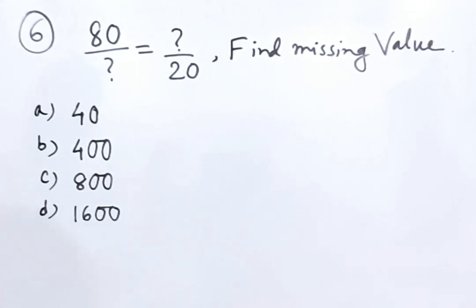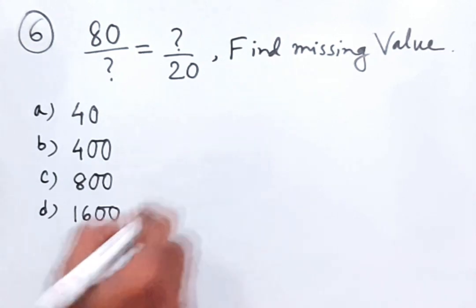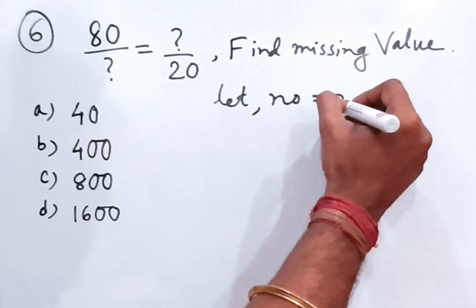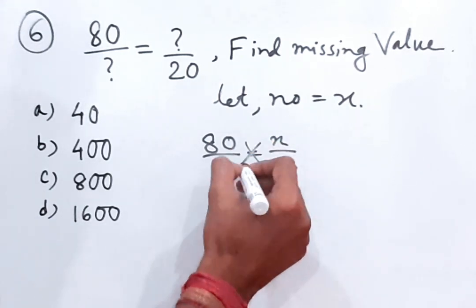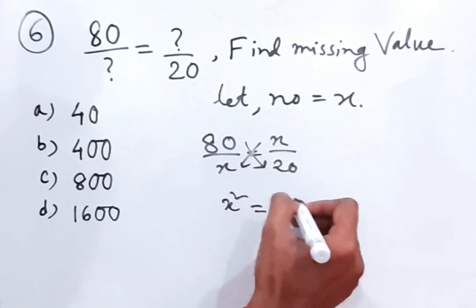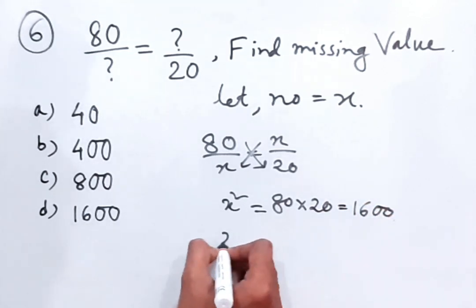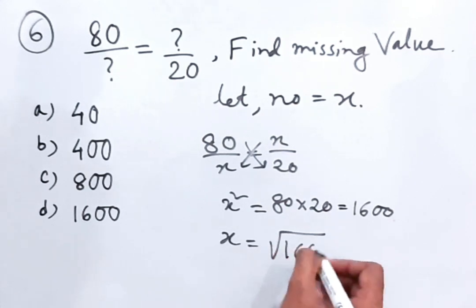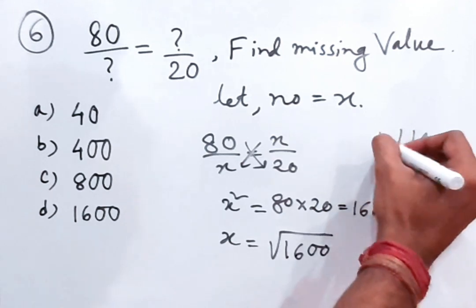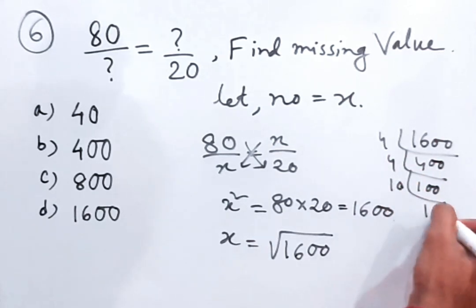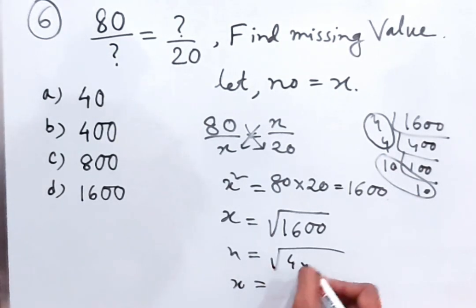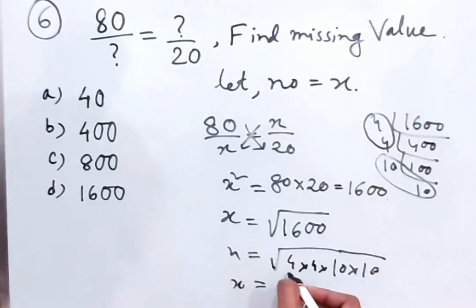Now, 80/? = ?/20 — find the missing value. Let the number equal x, so 80/x = x/20. Cross multiplication gives x² = 80 × 20 = 1600, so x = √1600. Breaking it down: √(4 × 4 × 10 × 10) = 4 × 10 = 40. So 40 is the answer.